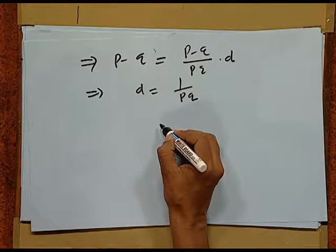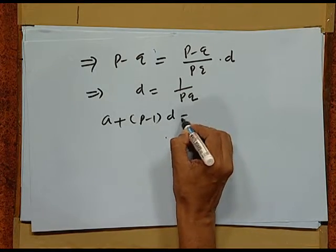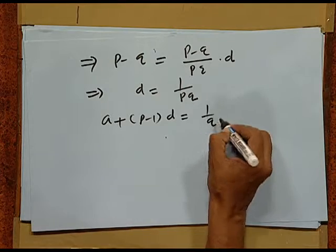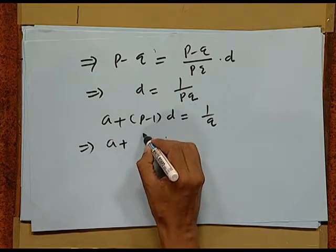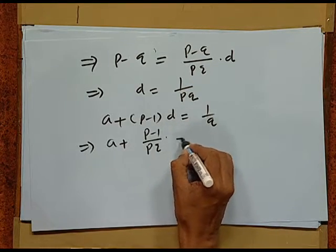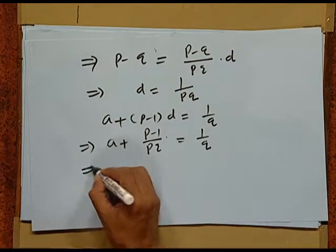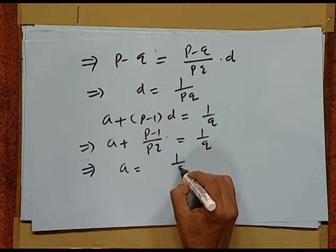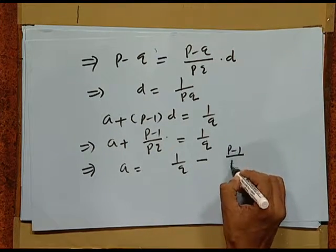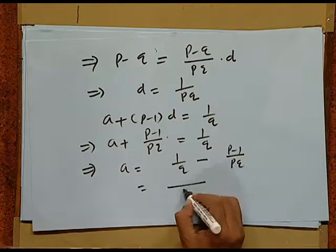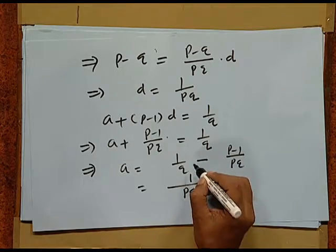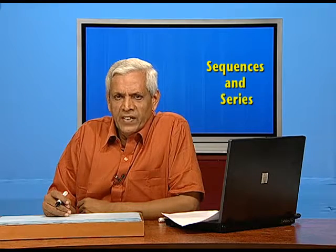Now to find a, we go to the first equation: a + (p−1)d = 1/q. Substituting d = 1/(pq), we get a + (p−1)/(pq) = 1/q, which gives a = 1/q − (p−1)/(pq) = 1/(pq). So both a and d have the same value 1/(pq).